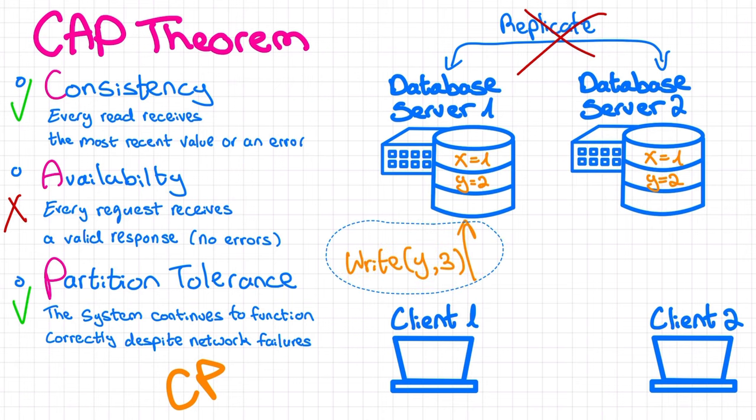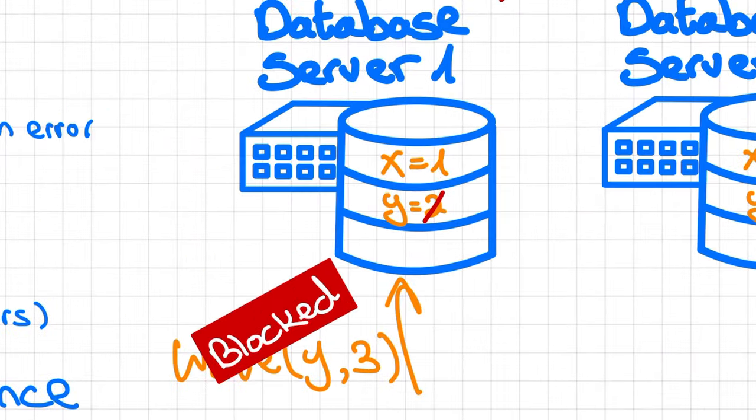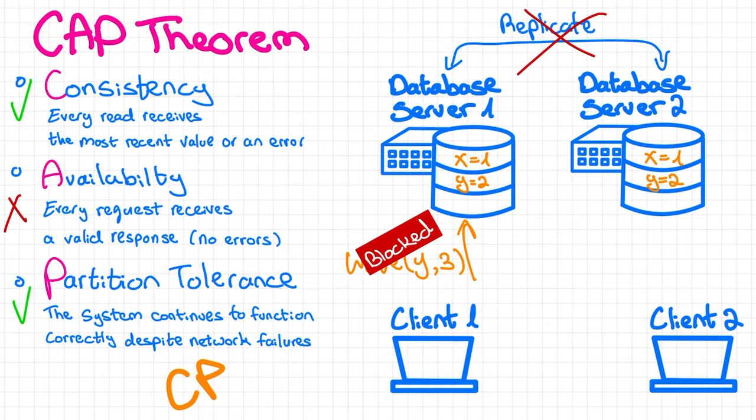...the new state would not be able to replicate to the other node, right? Because the nodes can't communicate with each other. This would cause subsequent reads to return inconsistent values. So in order to preserve consistency, we would have to block all updates during communication breaks. We would just have to accept that the system will be unavailable during partitions.